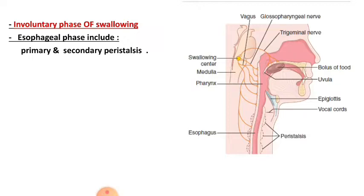This sphincter is normally constricted, and the intraluminal pressure at this point is about 30 mmHg. Compared to the mid-esophageal portion which is normally relaxed, when peristalsis starts in the esophagus and reaches this point, the sphincter undergoes receptive relaxation so that the contents of the esophagus can be emptied easily into the stomach.